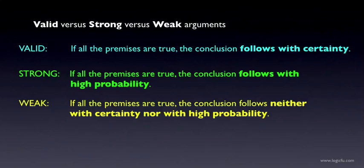These definitions summarize what we've seen so far. Validity, strength, and weakness are logical properties of arguments — they characterize the logical relationship between the premises and the conclusion. With valid arguments, the conclusion follows with certainty: it's impossible for the premises to be true and the conclusion false. With strong arguments, it's possible for the conclusion to be false, but it's unlikely — the conclusion follows with high probability. With weak arguments, the conclusion isn't even likely or highly probable; it just means that the premises don't give us good enough reason to think the conclusion is true. Both valid and strong arguments satisfy the logic condition for an argument to be good. Weak arguments fail to satisfy the logic condition, and so are automatically ruled out as bad.